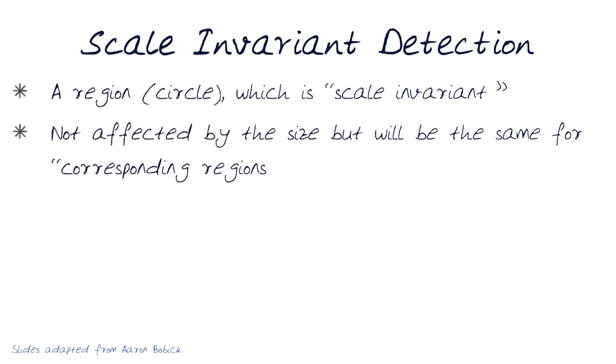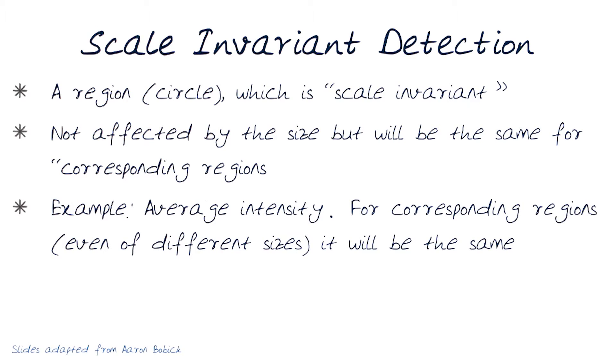To build on this, let's think about a simple example. Average intensities are interesting things to observe. For any corresponding regions, even if the object is of different size, the average intensity, the image pixel intensity in that region, will be the same.